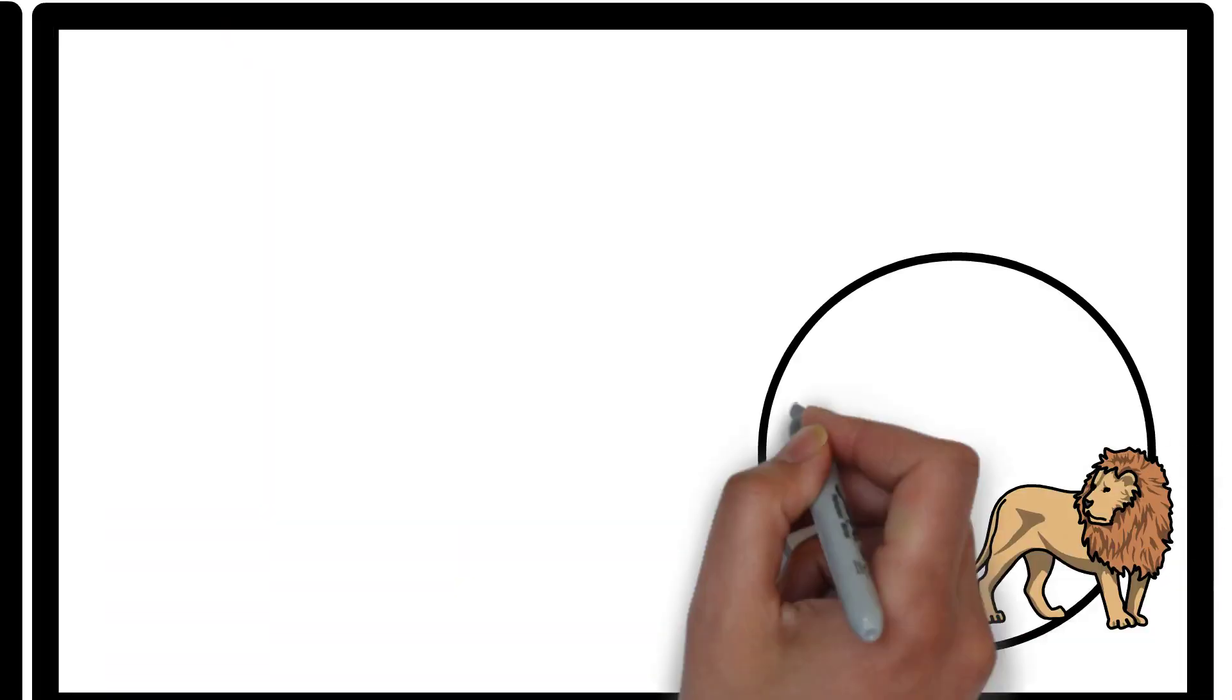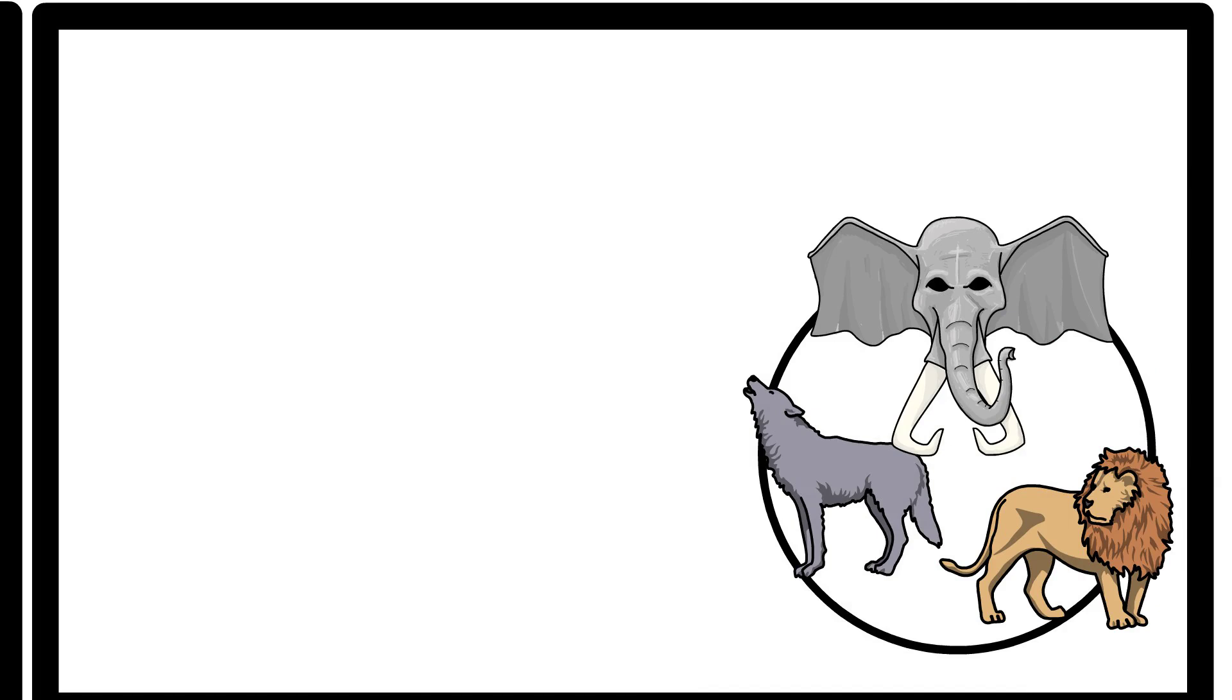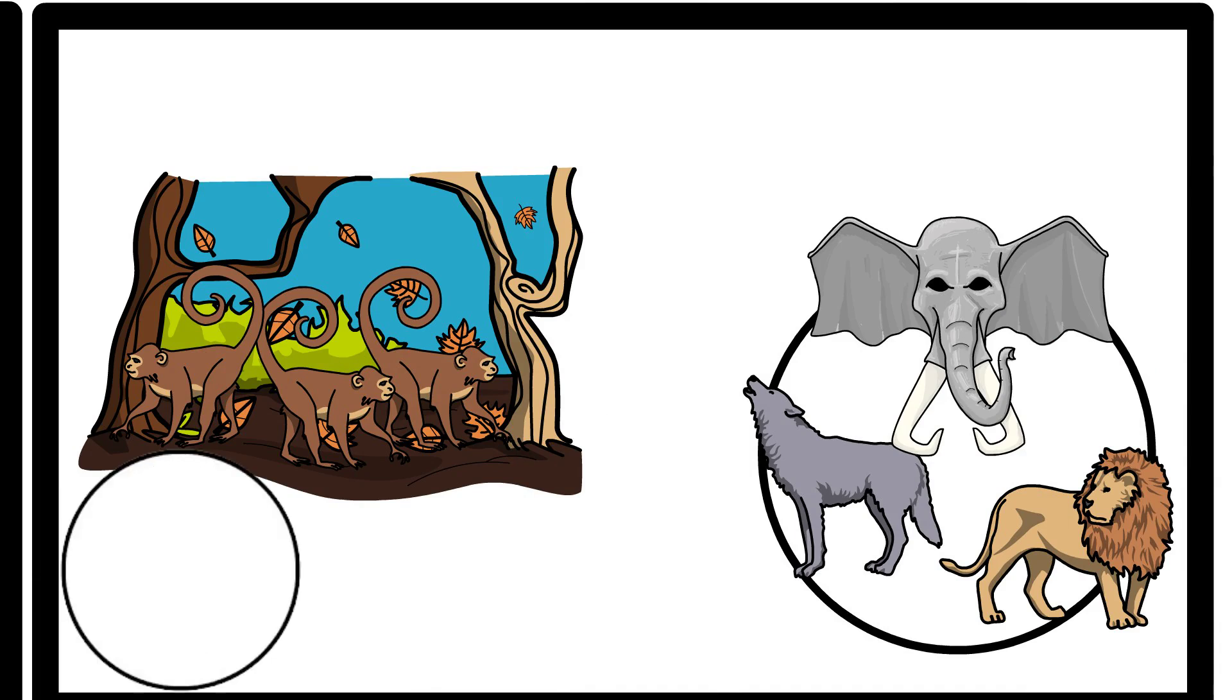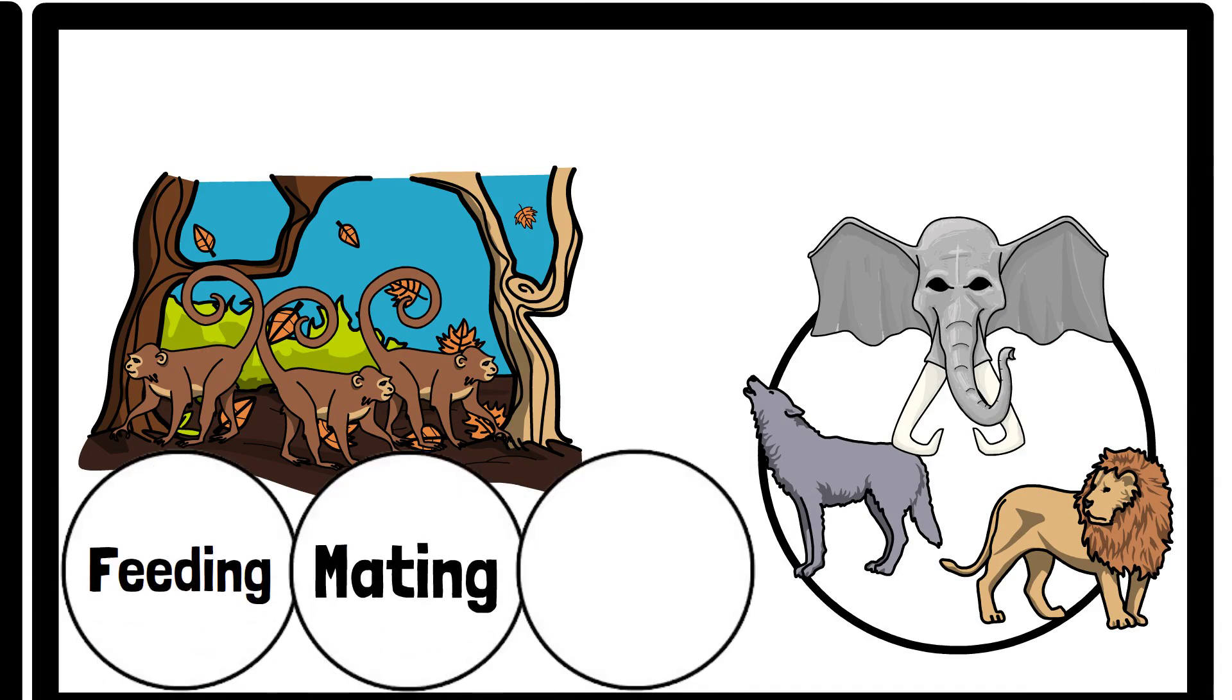Another example could be studying animals in the wild. A biologist observing a troop of monkeys in the jungle would use naturalistic observation to record their feeding, mating and social behaviours without disrupting their natural habitat.